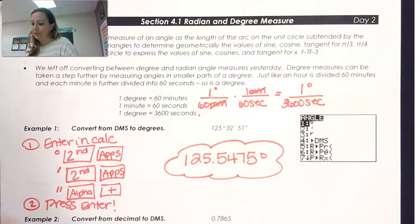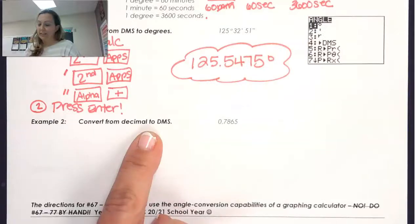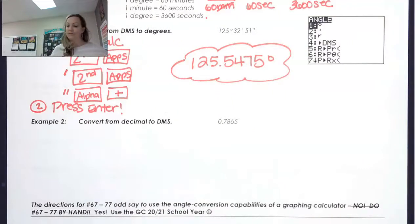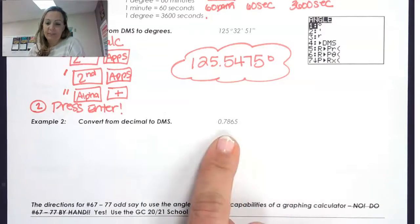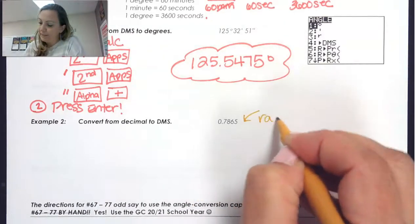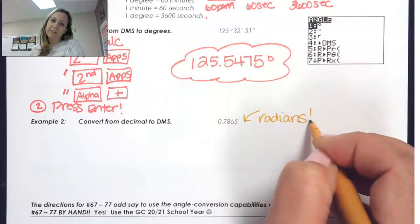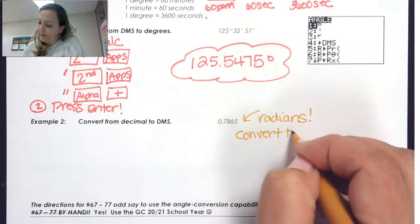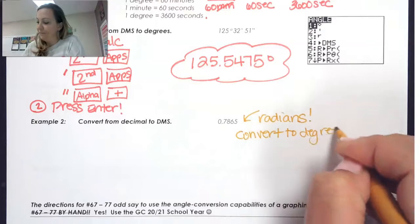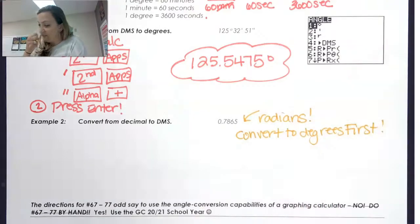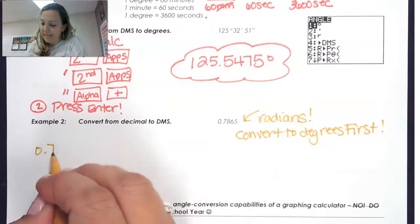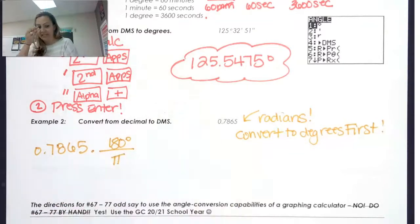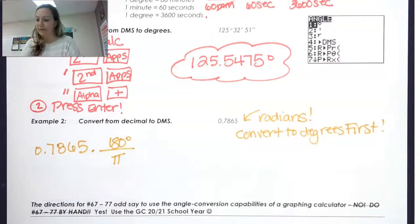The next question wants us to convert from decimal to degrees-minutes-seconds. One thing to be aware of: when we don't see a unit, this is not currently in degrees — it's in radians. So before using any of the conversion features on the calculator, we should definitely convert to degrees first. To convert from radians to degrees, we take the radians and multiply by the conversion factor of 180 degrees over pi.